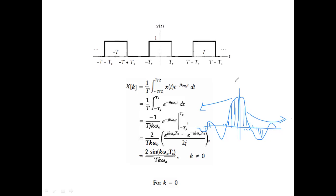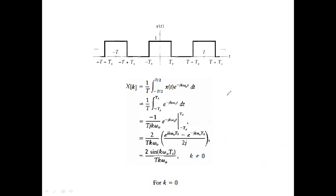The Fourier series converts the signal from the time domain to the frequency domain. The x-axis is k, which represents harmonics: k = 0 is DC (omega-naught × 0), k = 1 is omega-naught, k = 2 is 2·omega-naught, and so on. The frequency coefficients represent the signal in terms of the fundamental frequency and its multiples.